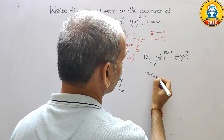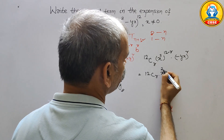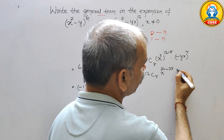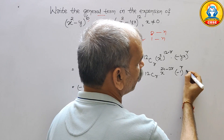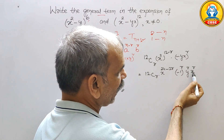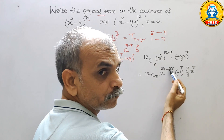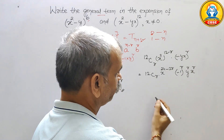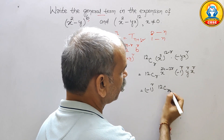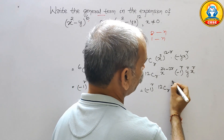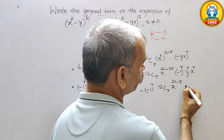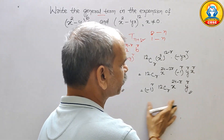Solving this, we get 12Cr · x^(24 - 2r). We write minus 1 first, giving minus 1 to the power of r, then y to the power of r, and x to the power of r. Since x appears in both terms, the powers add: 24 - 2r + r gives 24 - r. So the general term is: 12Cr · (-1)^r · x^(24 - r) · y^r. This is your general term for the second expression.